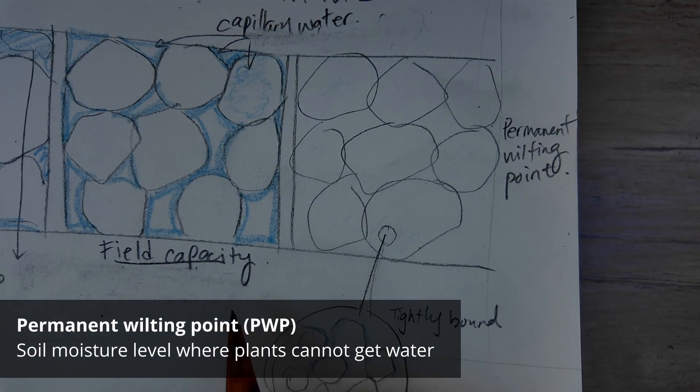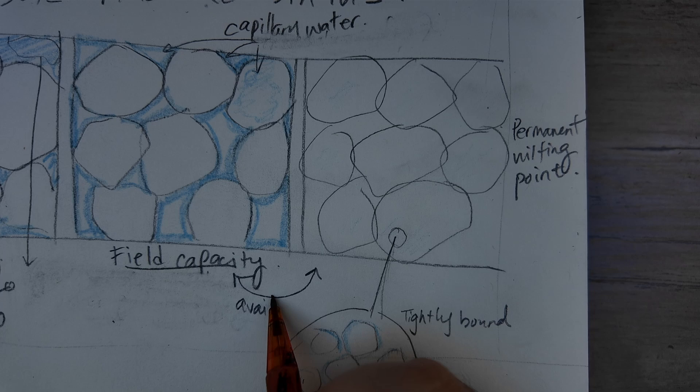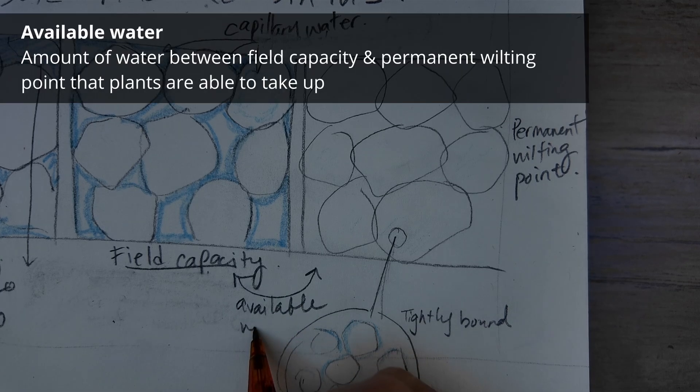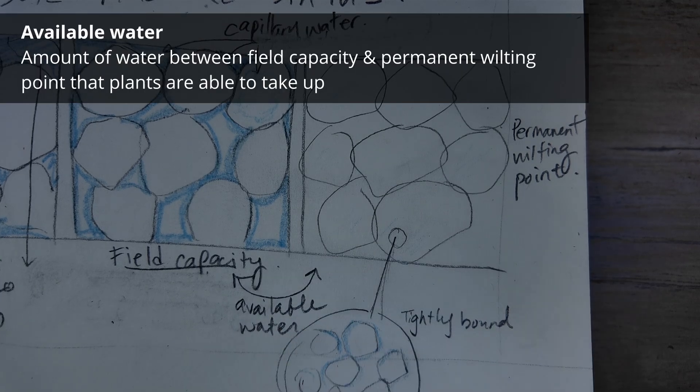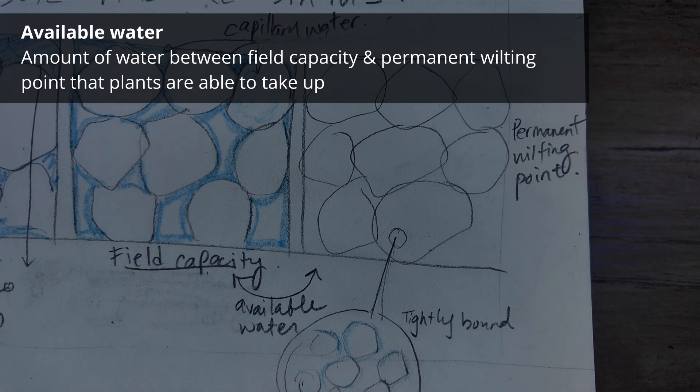This is called the permanent wilting point. The amount of water that is accessible between the field capacity and the permanent wilting point is called available water because that's what's available for plants to take up.